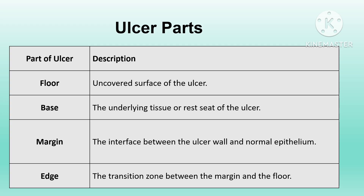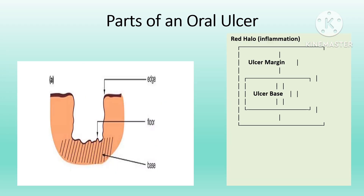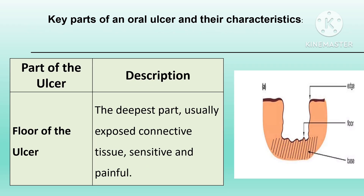Now let's talk about the various parts of an oral ulcer. An oral ulcer can be divided broadly into the ulcer base, which is the bottom layer, often covered with a whitish or yellowish layer of fibrin giving the ulcer a distinctive appearance. The color of the base can provide clues about the ulcer type — a white or yellow base is common in aphthous ulcers.